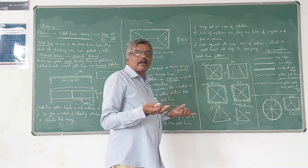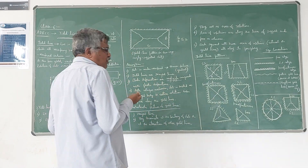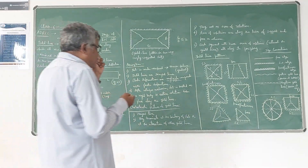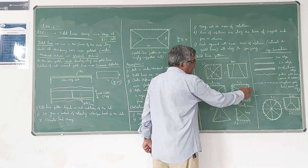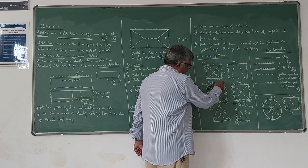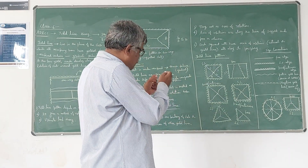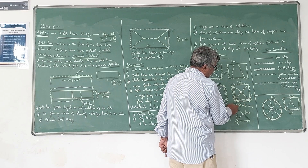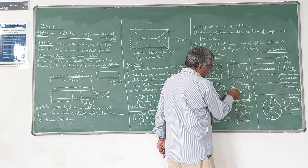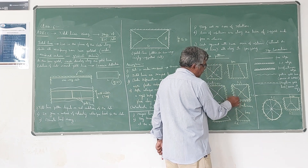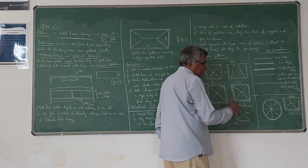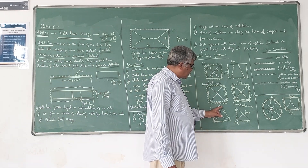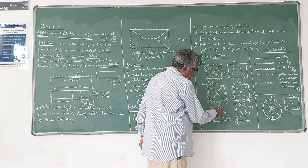This is similar to a fixed beam — in a fixed slab, maximum positive bending moment occurs at mid span and negative bending moment at the supports. So negative yield lines form around the periphery and positive yield lines appear at mid span. When two edges are fixed or continuous and two are simply supported, negative yield lines form at the continuous edges and positive yield lines at the simply supported portions.